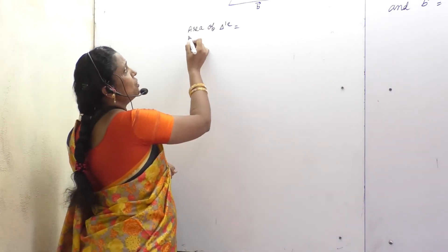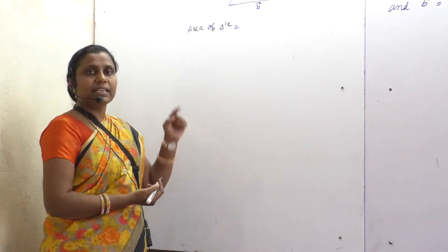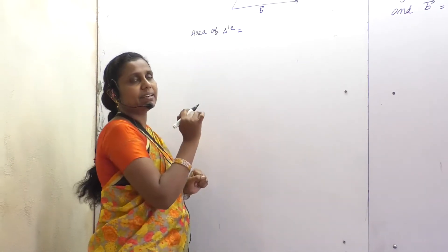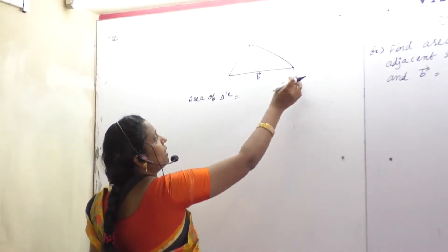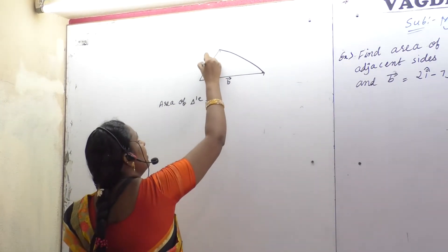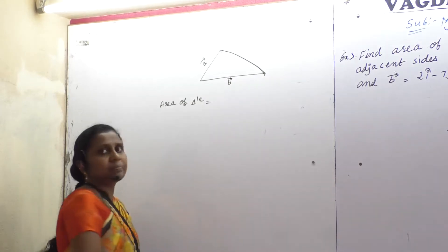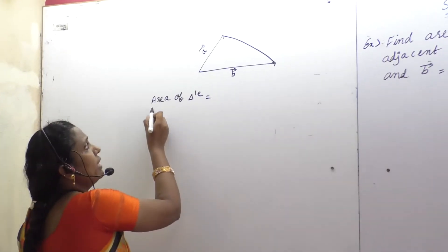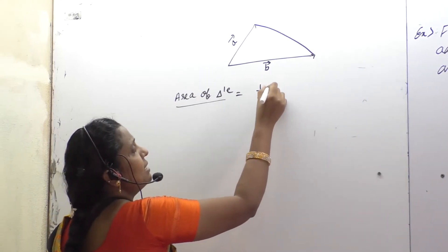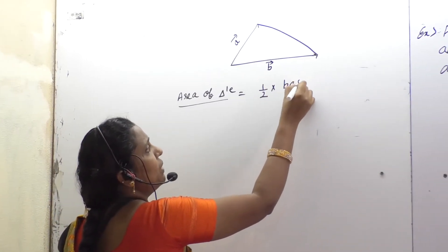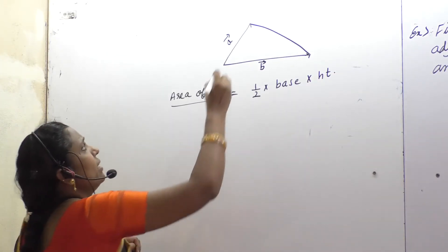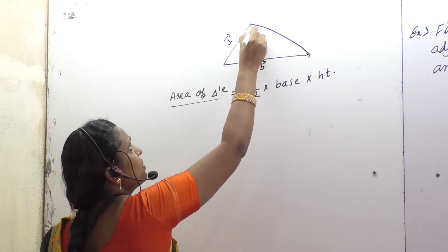First, the application is to find the area of a triangle, where the cross product is used. Take a triangle with vectors B and A. As you know, area of the triangle — since elementary classes we are studying — is given by half into base into height. In this case, I will go for the construction: the height is the perpendicular distance. The acute angle theta is the angle between A and B.